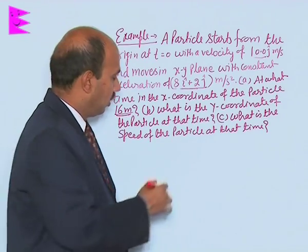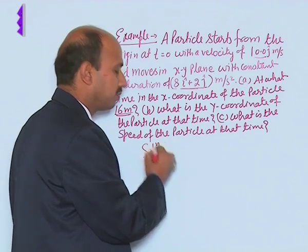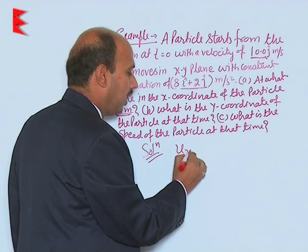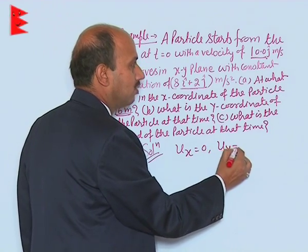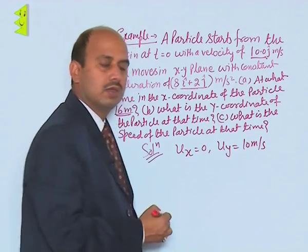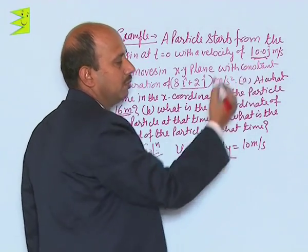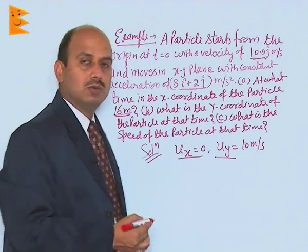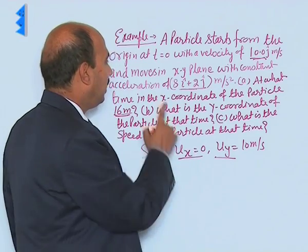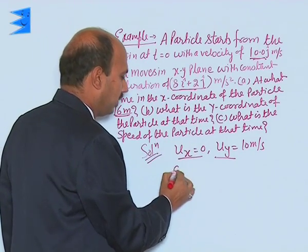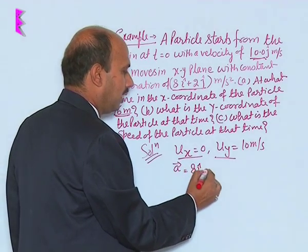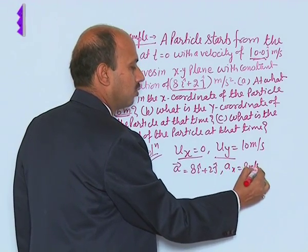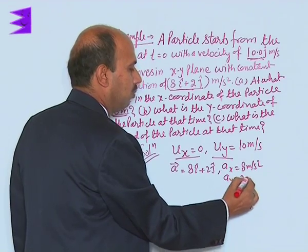First, let's see what is given. The initial velocity is along the y-axis, so we write u_x = 0 and u_y = 10 m/s. Since the velocity is 10j m/s, there is no velocity along the x-axis at t=0, so u_x = 0. For acceleration, A = 8i + 2j, so A_x = 8 m/s² and A_y = 2 m/s².